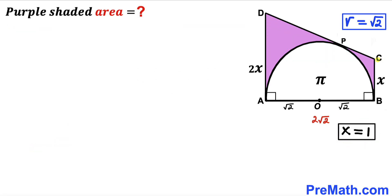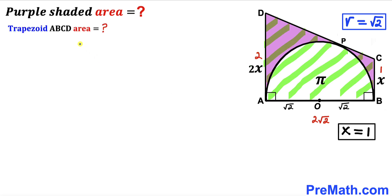So our x value turns out to be 1. Therefore side BC = x = 1 unit, and side AD = 2x = 2 units.